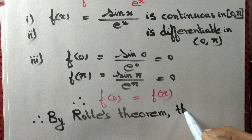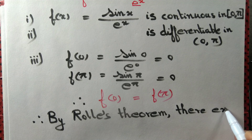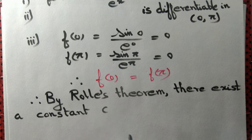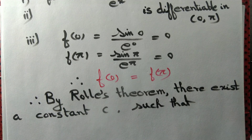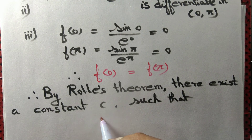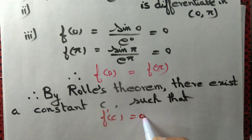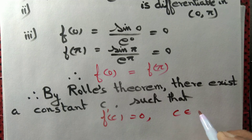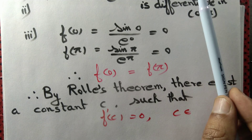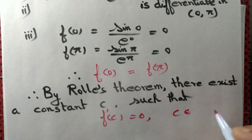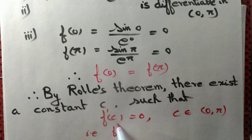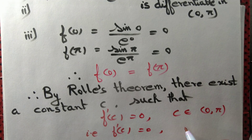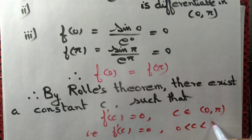Rolle's theorem guarantees the existence of a constant c such that f'(c) = 0, and c must lie in the open interval (0, π); that is, c is greater than 0 and less than π.